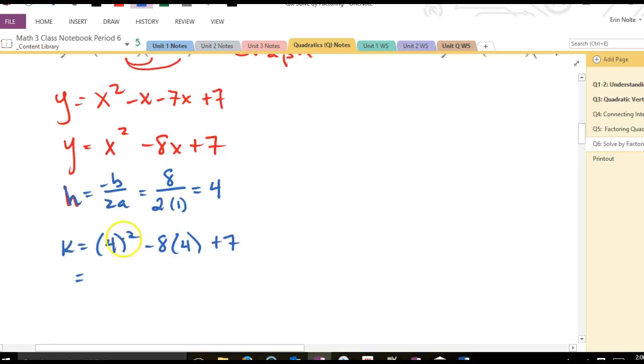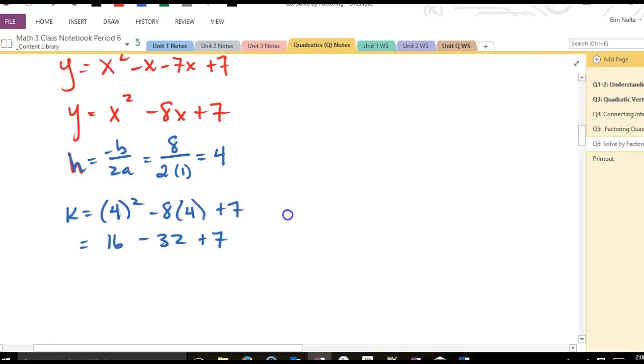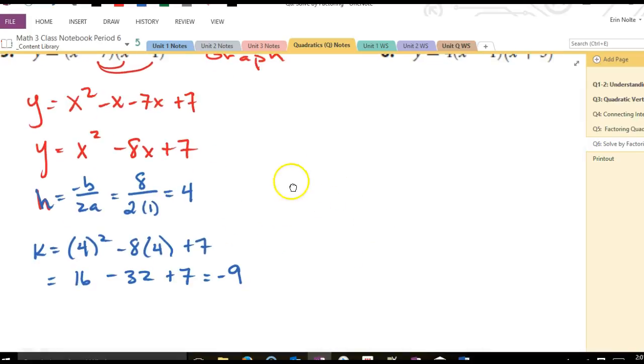Plug it into the original, right? So 4 squared is 16. And 8 times 4 is 32. And then we have a plus 7. So what is 16 minus 32? Negative 16. What's negative 16 plus 7? Negative 9. Good. So if I was going to graph that, my vertex is at 4, negative 9.